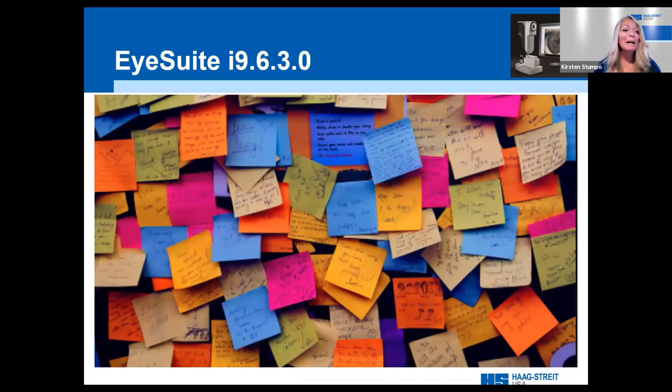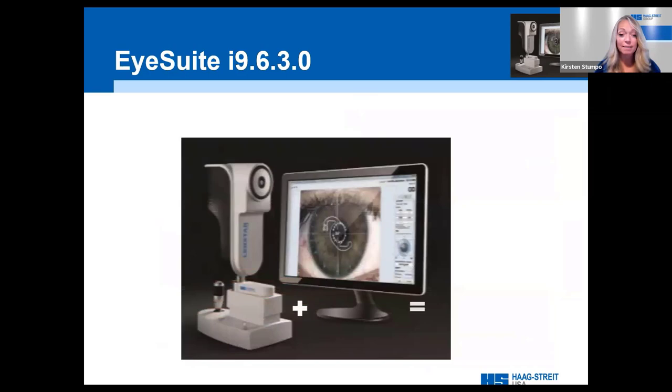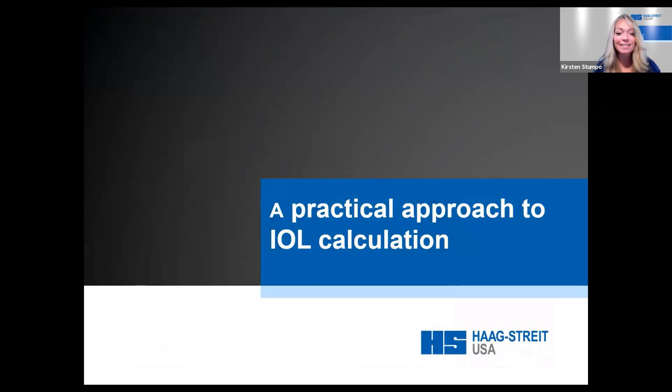So if you're tired of all the Post-it notes to keep track of formulas for different scenarios, and tired of spending hours running toric calculations on third-party calculators, here's one simple formula: LensStar plus iSuite equals a practical approach to IOL calculations.